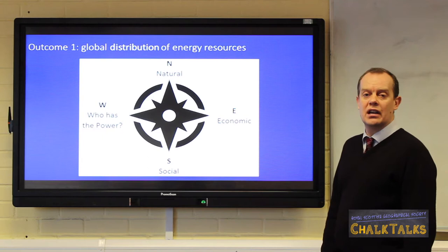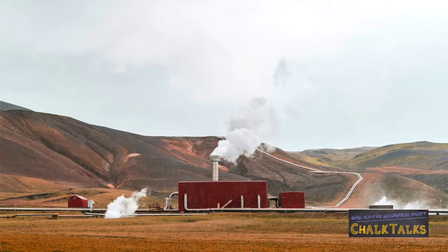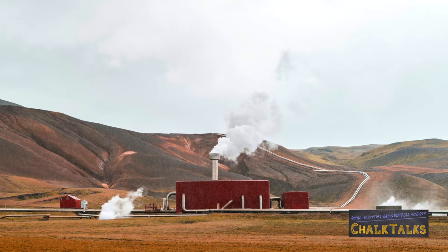Let's look at some examples. Here we see the nations which use geothermal energy. There is strong physical geography here, as the nations have a close proximity to crustal boundaries or other zones where magma is close to the surface. But economic factors are also important.